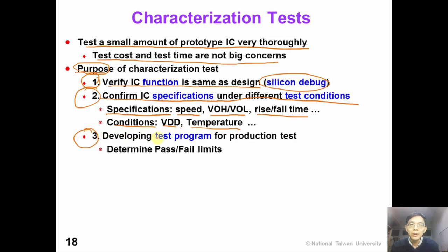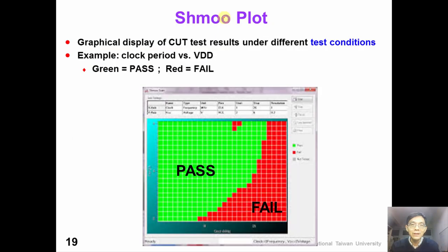Finally, the third purpose of characterization test is to develop a test program for production test. We need to determine the pass-fail limits in production test so that we can have an acceptable yield. A Shmoo plot is a good way to show the results of characterization test. A Shmoo plot is a graphical display of characterization test results under different test conditions.